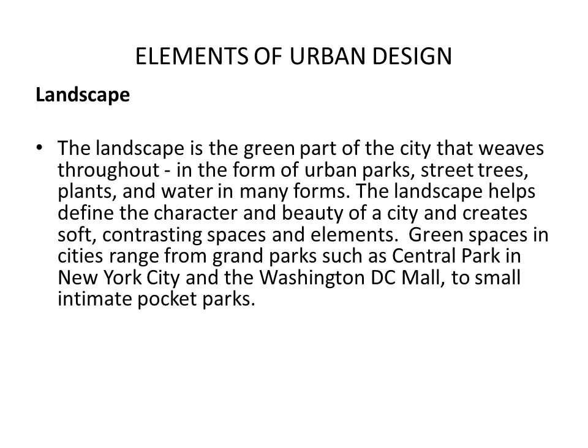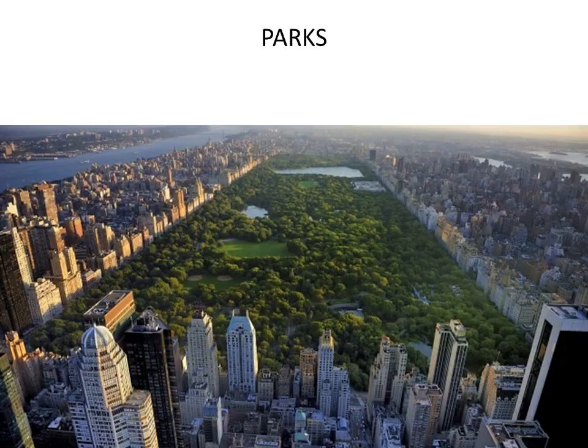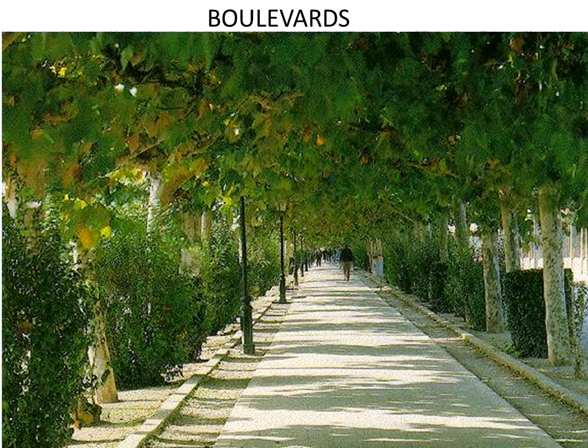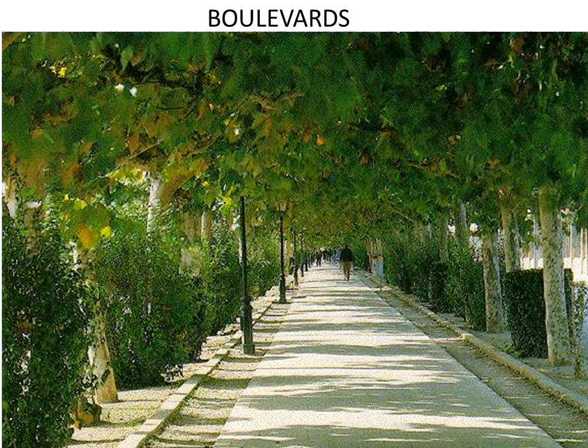The next element is landscape. The landscape is the green part of the city that weaves throughout in the form of urban parks, street trees, plants, and water in many forms. The landscape helps define the character and beauty of the city and creates soft, contrasting spaces and elements. Green spaces in cities range from grand parks such as Central Park in New York City and the Washington DC Mall to small, intimate pocket parks. This is Central Park in New York City. Boulevards are also important landscape spaces.